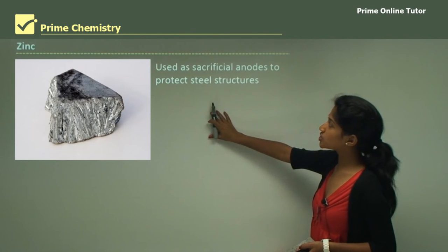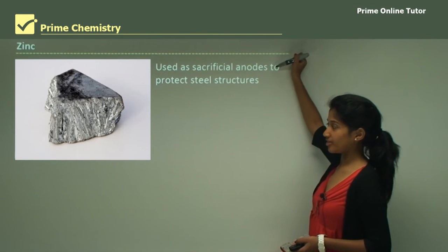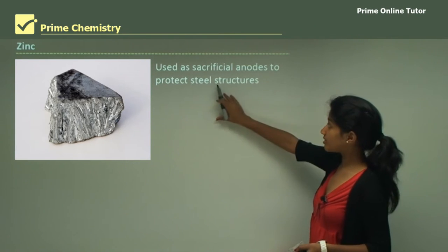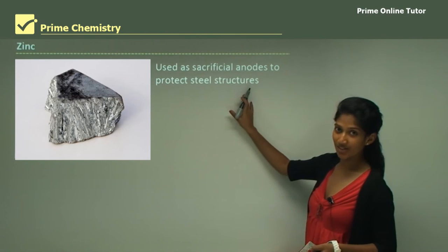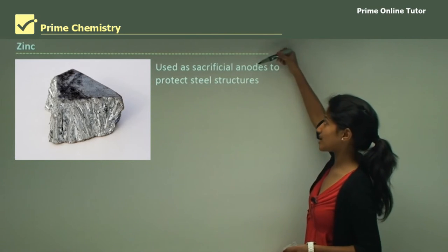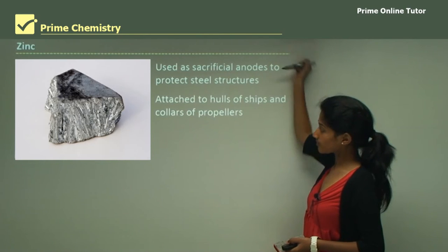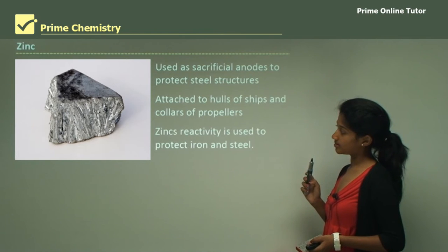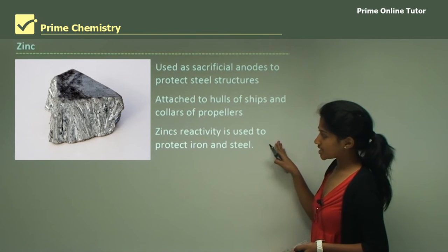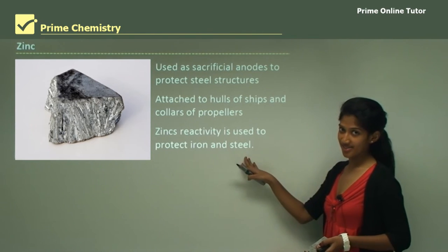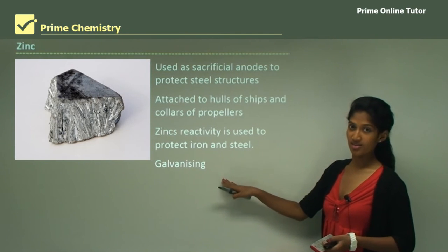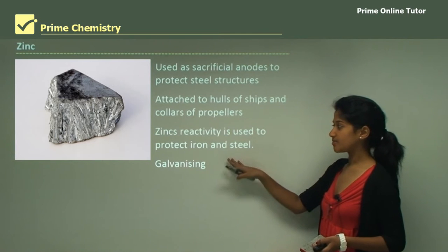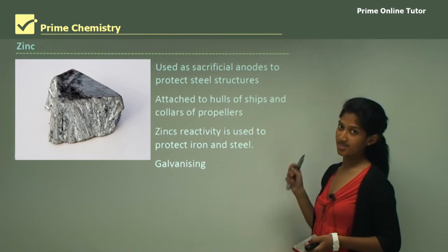Zinc is used as a sacrificial anode to protect steel structures. It corrodes instead of the steel and sacrifices itself. That's why it's called a sacrificial anode. It is attached to the hulls of ships and collars of propellers. Its reactivity is used to protect iron and steel and this is called galvanizing. It's zinc galvanizing the iron and the steel.